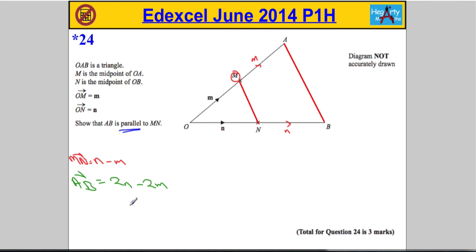So what we can now say is, AB, actually, the vector from A to B can be written as 2 lots of n minus m.